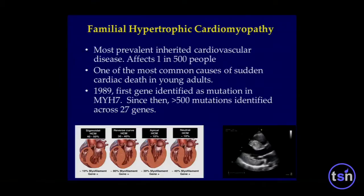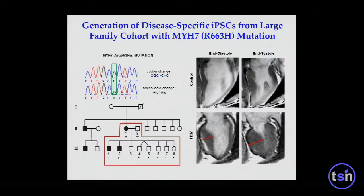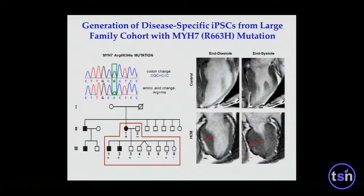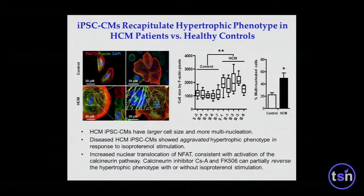Many genes have been identified for HCM. Back in 1989, Christine Seidman identified myosin heavy chain 7 as the first gene involved. We recruited a large family where the mother has the disease and had eight kids. Kids 1, 2, 3, and 7 have the mutation; kids 1 and 2 have the phenotype visible on MRI as a very thick septum. Whole genome sequencing revealed a myosin heavy chain 7 mutation — arginine to histidine switch. The question was: if we make iPSC-derived cardiomyocytes, do the affected kids look different from the unaffected ones?